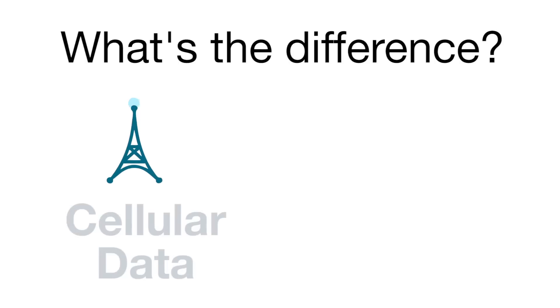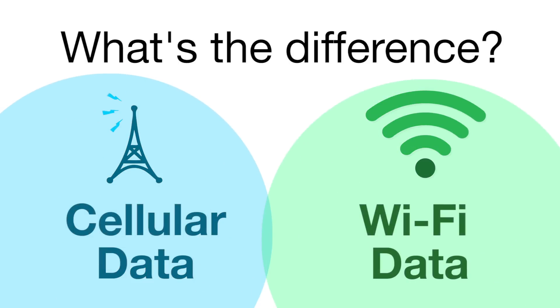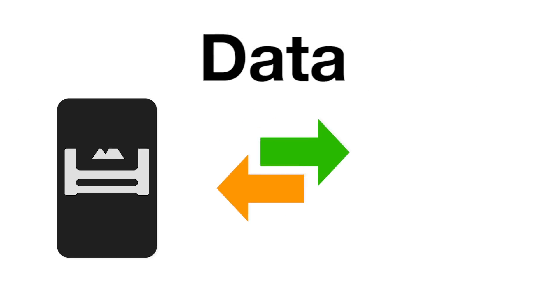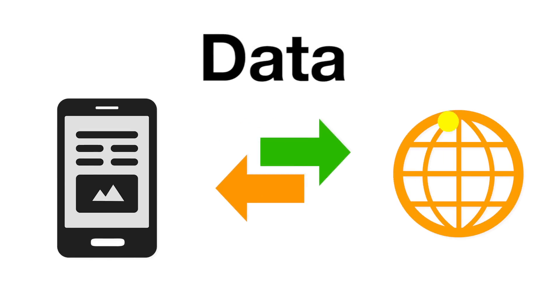So you want to know the difference between cellular and Wi-Fi data? Let's start with what data is. Data is electronic information that's sent from or to your phone.